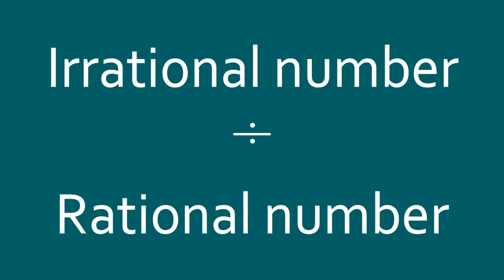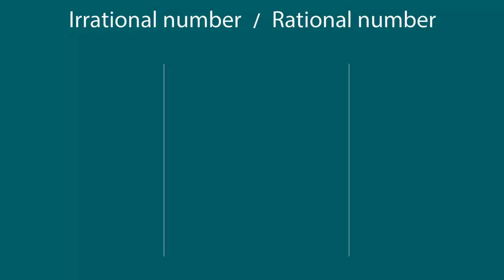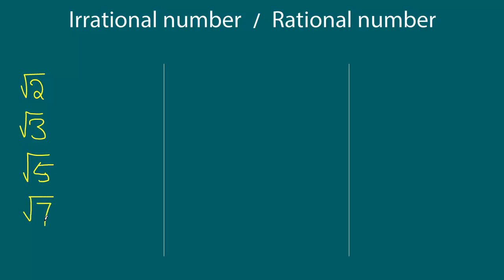What happens when we have an irrational number and we divide that by an irrational number? Let's find out. So what we are going to do is write some irrational numbers: square root 2, square root 3. I was about to write square root 4, but we know square root 4 is not an irrational number, so let's make it square root 5, square root 7, and so on and so forth.